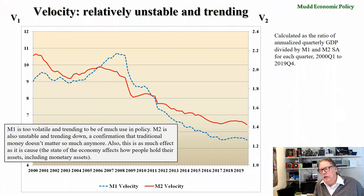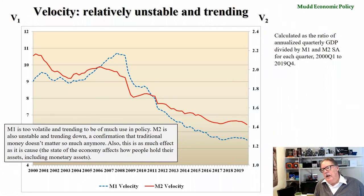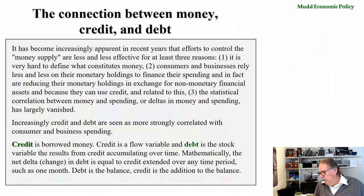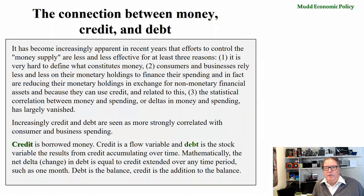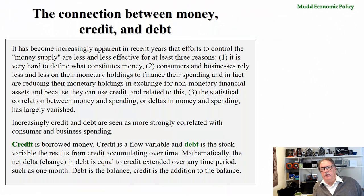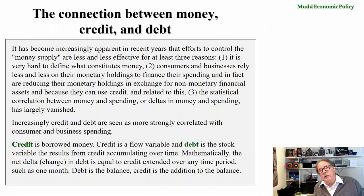There's no stability in velocity — the trend lines are not trending down stably either. It's become increasingly apparent that efforts to control the money supply are less and less effective for at least three reasons. First, it is very hard to define what constitutes money — the definition keeps changing. There was an M3 about five years ago; there no longer is. When I looked into it, there was M1A and M1B, and interim definitions as well. If this worked well, why do they have to keep changing the money supply definition? They're changing it because they're trying to find something statistically correlated with economic growth.